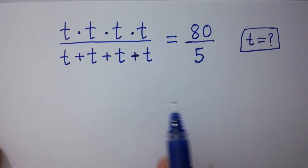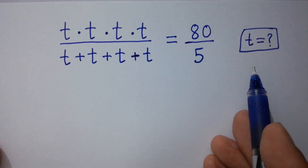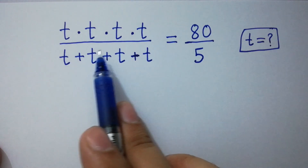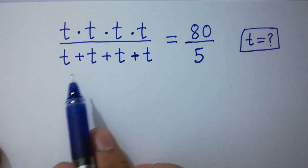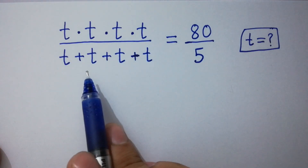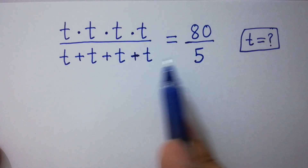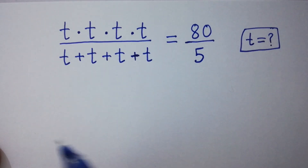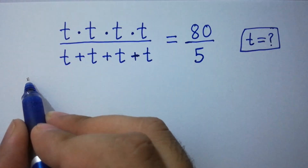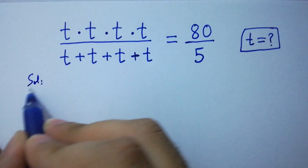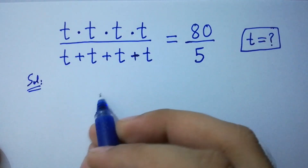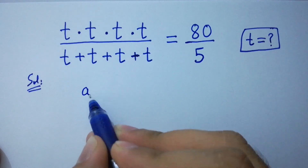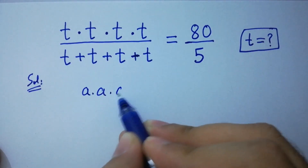Hello friends, find the value of t if t times t times t times t over t plus t plus t plus t equals 80 over 5. Let's have a solution. As we know, a times a times a times a equals a to the power 4.